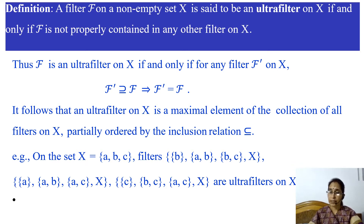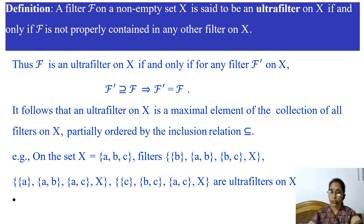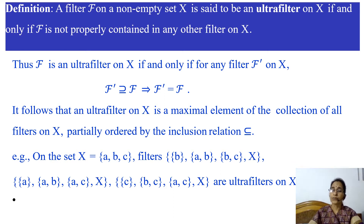If we consider the collection of all filters on a non-empty set X, then that collection is partially ordered by the inclusion relation, because the inclusion relation is reflexive, anti-symmetric, and transitive. So the collection of all filters on set X forms a partially ordered set, and any maximal element of that partially ordered set is an ultrafilter on X.